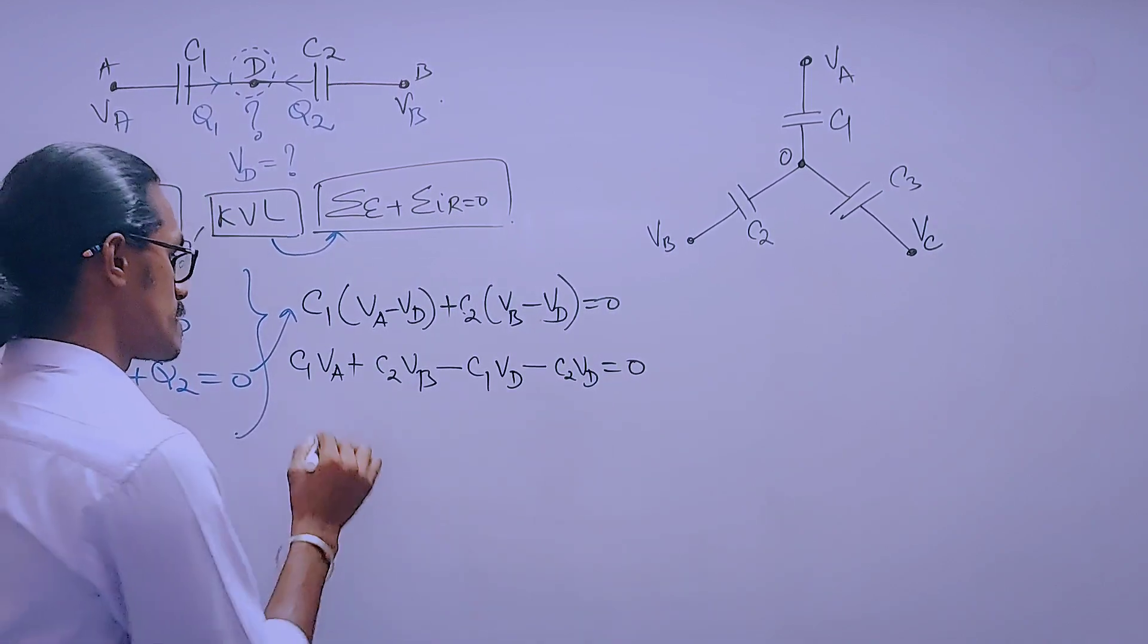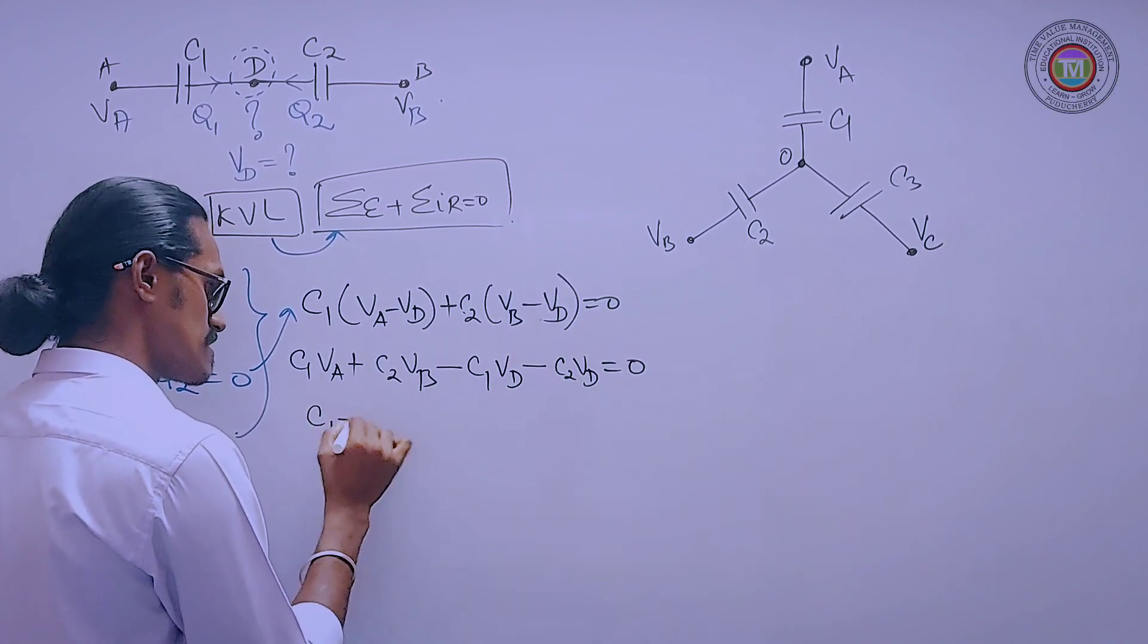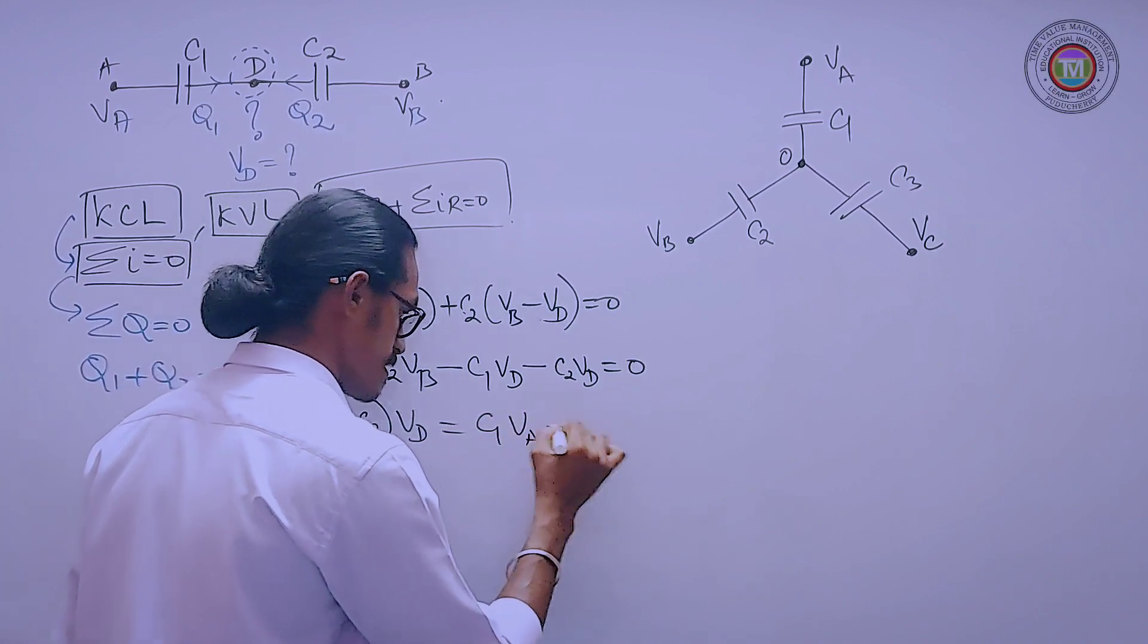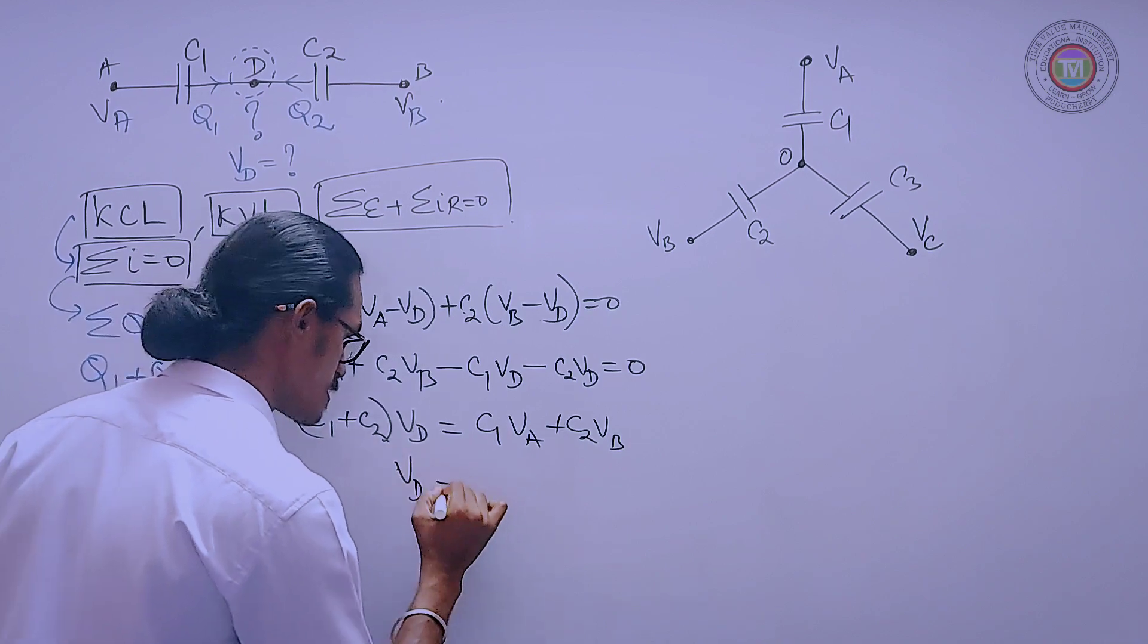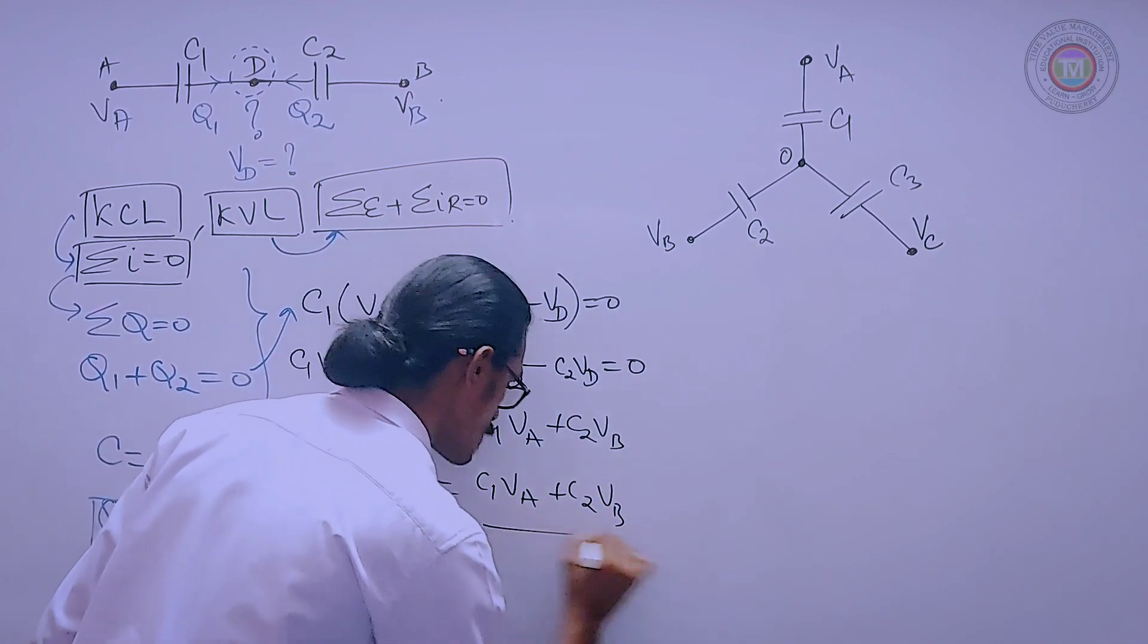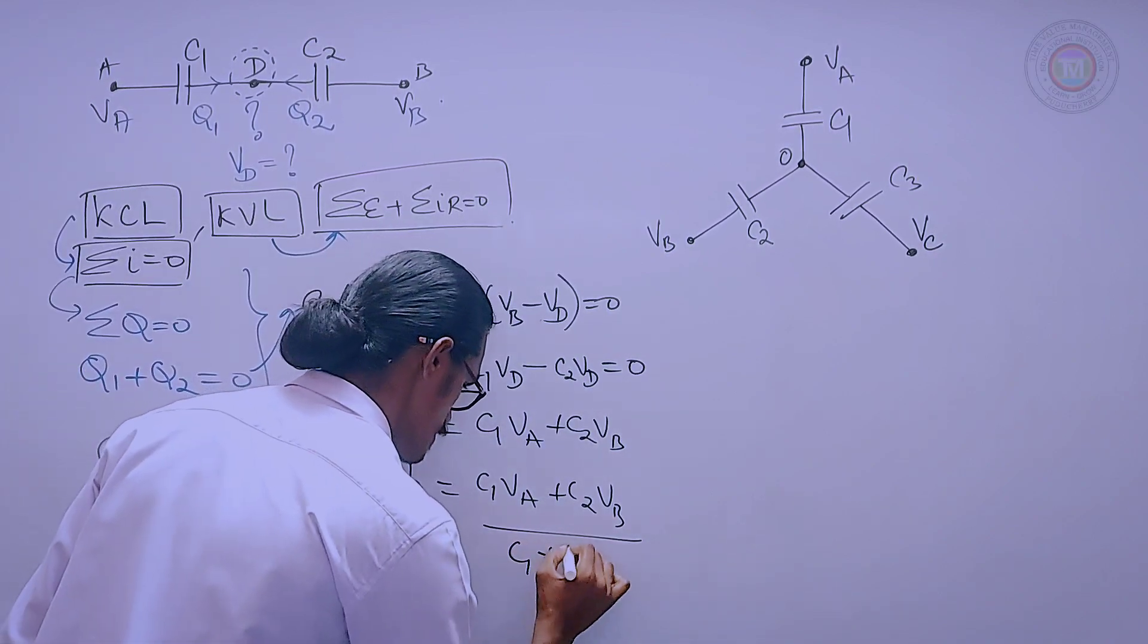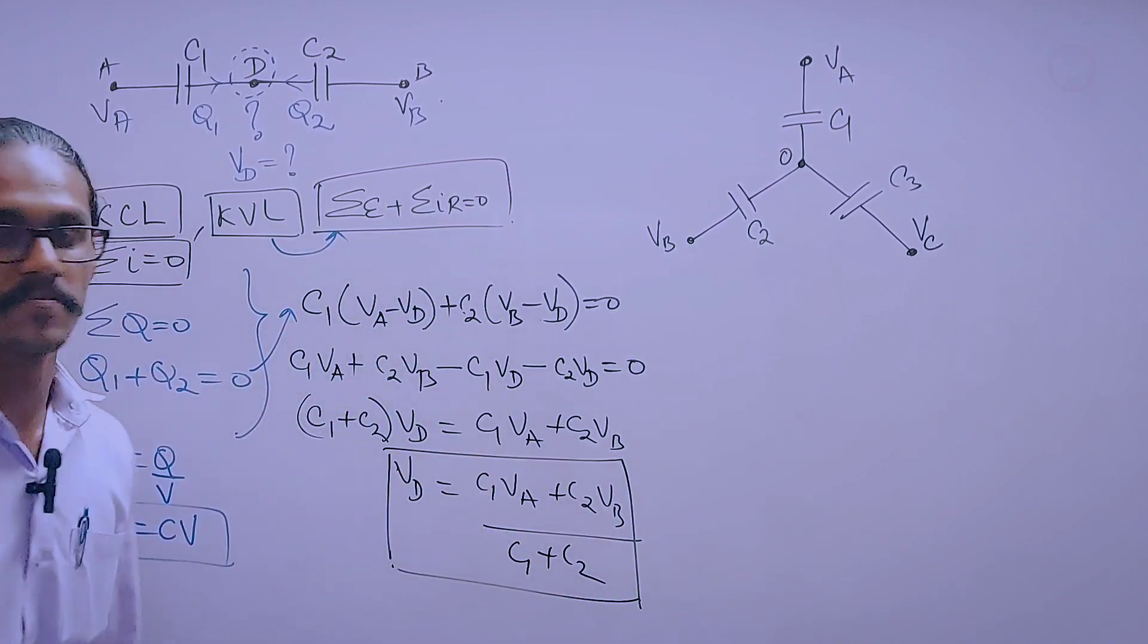VD we want, just bring this term here. So what is C1 plus C2 times VD? It is simply C1 VA plus C2 VB. What is our VD? It is C1 VA plus C2 VB whole divided by C1 plus C2.